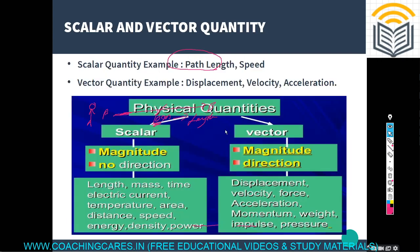Speed, energy, and power are also scalar quantities. Now let's look at more details about these two quantities. For scalar quantities like length, temperature, and area, there is only magnitude and no direction. For vector quantities, magnitude comes along with direction.